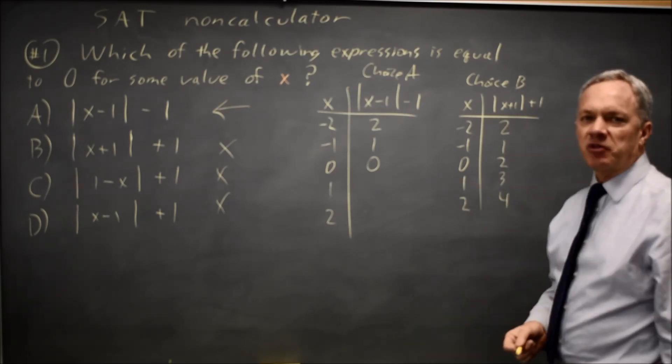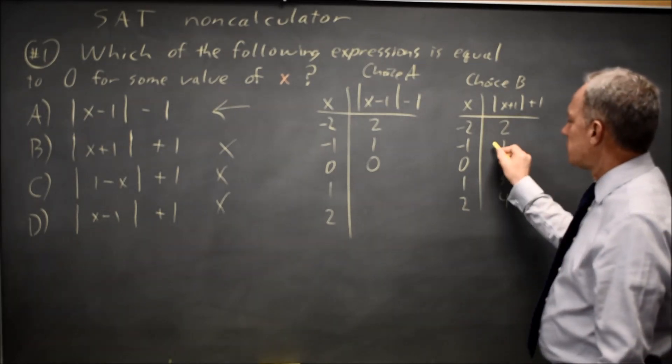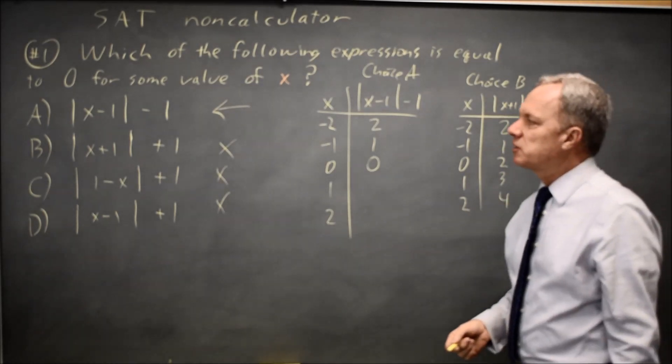So we see that this is the absolute value V shape, but it's shifted to the left by one and up one. And that's the third way we can look at this.